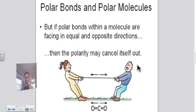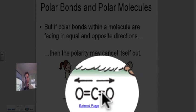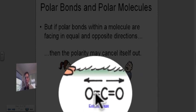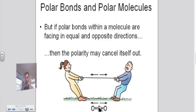We can also have polar bonds on a molecule where the molecule itself is not polar. As we look at carbon dioxide, this oxygen wants to pull the electrons closer to it, and the other oxygen in the exact opposite direction wants to pull the electrons closer to it. So what we have is a canceling out of these polar bonds, making CO2 a non-polar molecule.